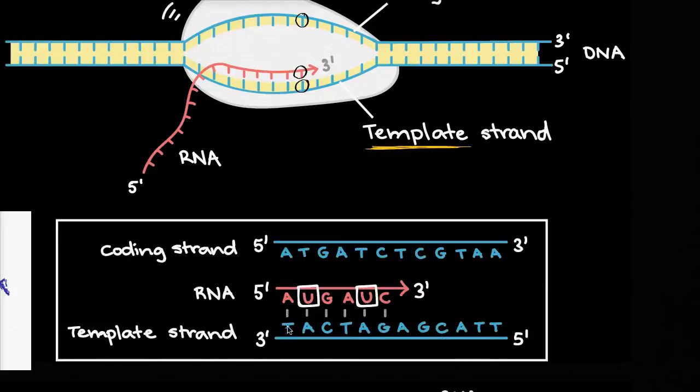If you have a thymine, well on the RNA, you'd have the adenine. And look, on the coding strand of DNA, the one up here, you would also have an adenine. And they are essentially, the coding strand and the RNA essentially end up being the same sequence,